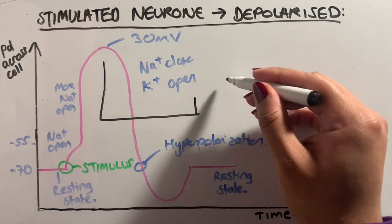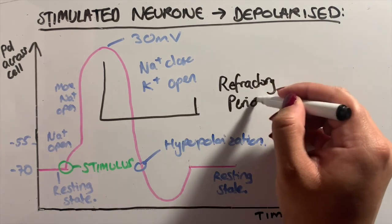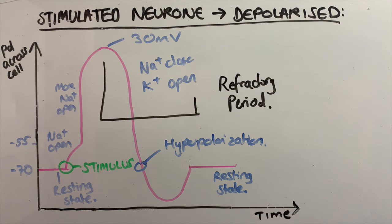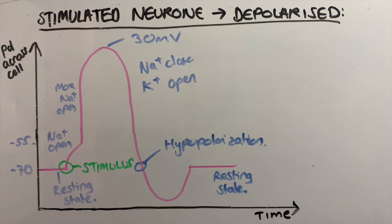So another thing to note is that the period between plus 30 millivolts and when the resting state is obtained is known as the refractory period. This is a period of recovery for the neurons, a slight delay before the cell membrane returns to normal so that it can be excited again by another stimulus. During this time, the ion channels are recovering and cannot open. The sodium channels are closed as well as the potassium ion channels.